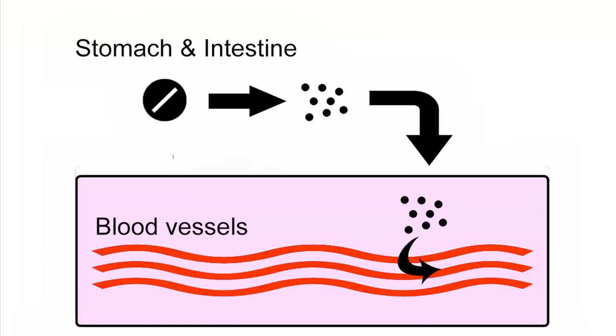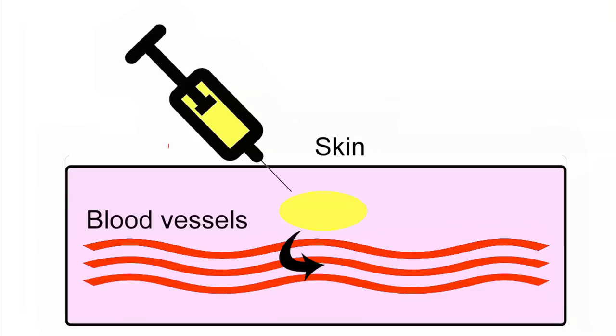But first, there's an important concept about these injections you need to understand. When you take a tablet, the small blood vessels in the stomach and bowel absorb the medication. A subcutaneous injection leaves a small amount of medication just under the skin. Just like in the stomach, the small blood vessels in the skin absorb the medicine. So you can be assured that you aren't injecting the medication directly into the blood.